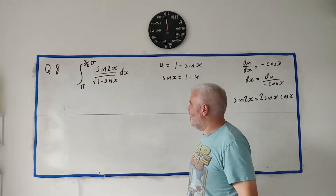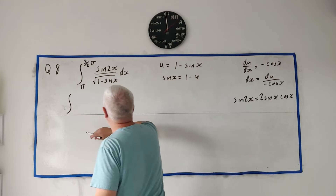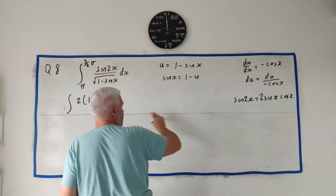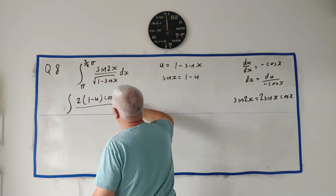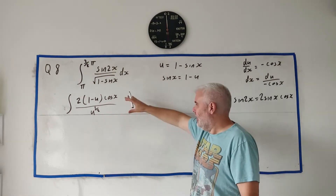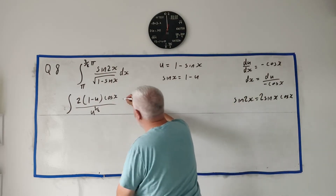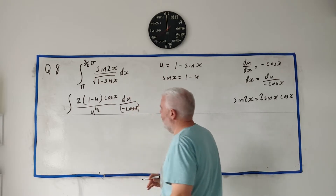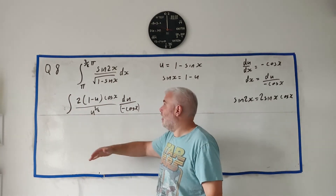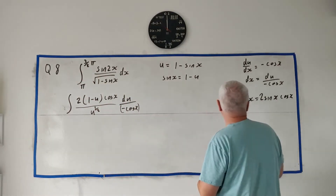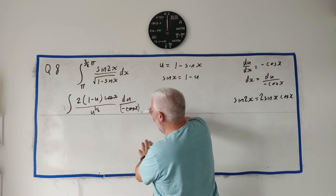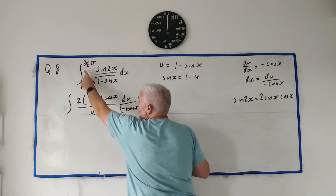The rest is just going to be long, messy maths. Let's rewrite this equation. The integral of — instead of sine 2x, I'll write 2, and instead of sine x, I'm going to write 1 minus u, cosine x, all over — instead of 1 minus sine x, I'll put u, and instead of the square root I'll write the power of a half. Instead of dx, I'll use du divided by minus cosine x. The cosines cancel, and the minus and the 2 can come all the way outside, giving us minus 2.